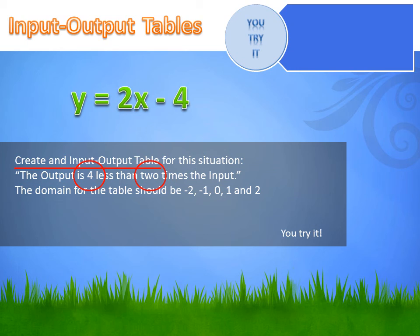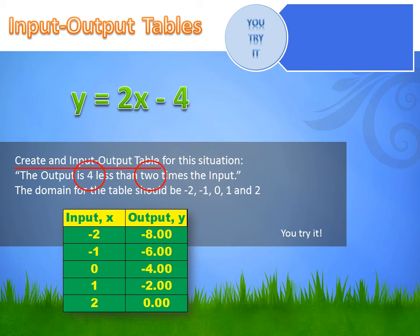Well, that's really the hard part. The input output table is easy. I just create a table. And they've told me what my domain is. It's minus 2 to 2. So I put that in the X column. And for each of those X values, I calculate the output or the Y value. And that's what my table looks like. And I hope yours looks exactly like that.